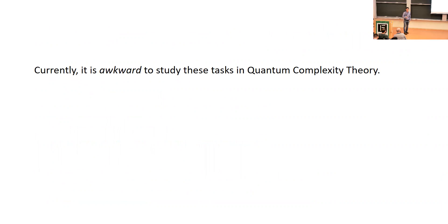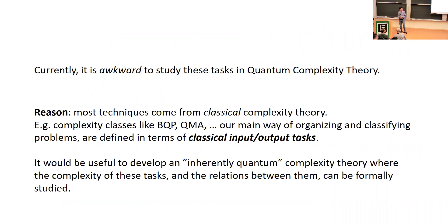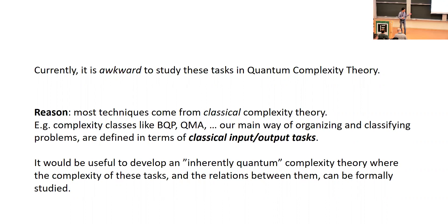Currently it's awkward to study these tasks in quantum complexity theory because most of the techniques we use come from classical complexity theory — a subject studied for over 50 years. Complexity classes like BQP, QMA, and PH are all defined in terms of classical input and output tasks. We don't really have a natural language to formulate the kinds of problems I just mentioned. So it would be really useful to develop some kind of inherently quantum complexity theory where tasks like error correction, ground state preparation, and decoding Hawking radiation can be naturally formulated.